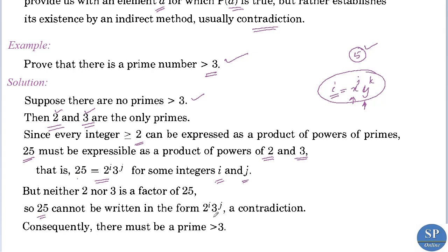So 25 cannot be written in the form 2 to the power i times 3 to the power j. This is a contradiction because we assumed that 25 can be expressed in this form — since 25 is an integer greater than or equal to 2, it should be expressible as a product of powers of the primes 2 and 3. But 25 cannot be expressed as 2 power i times 3 power j because 2 and 3 are not factors of 25. This is a contradiction, so our assumption was wrong.